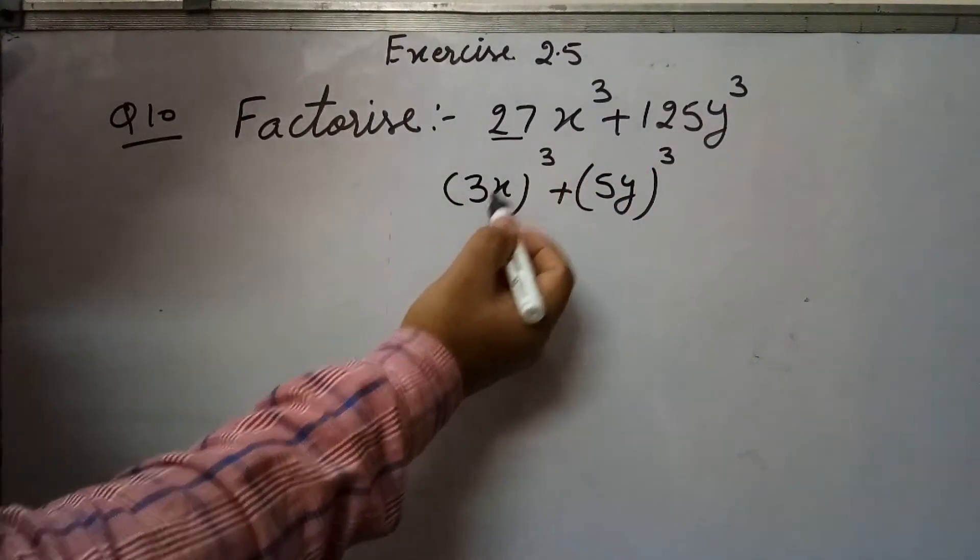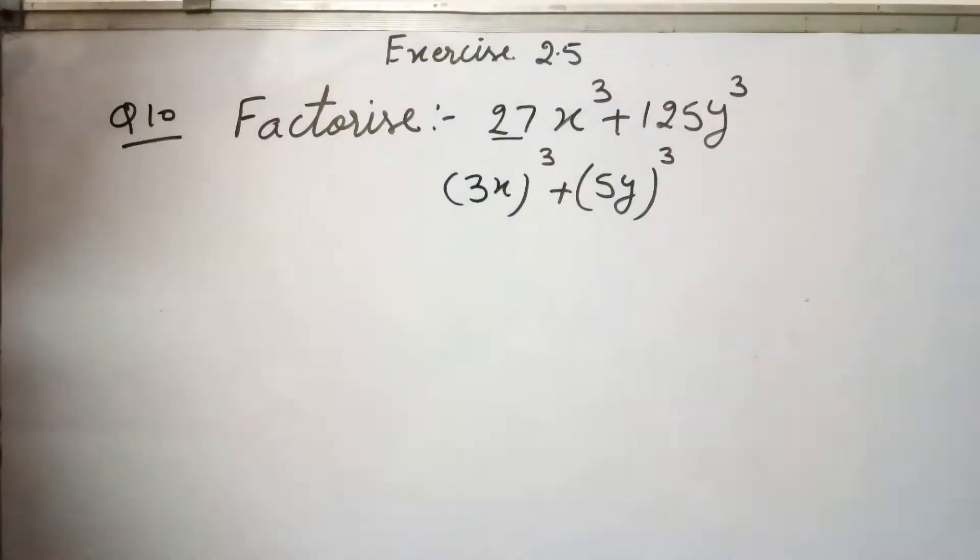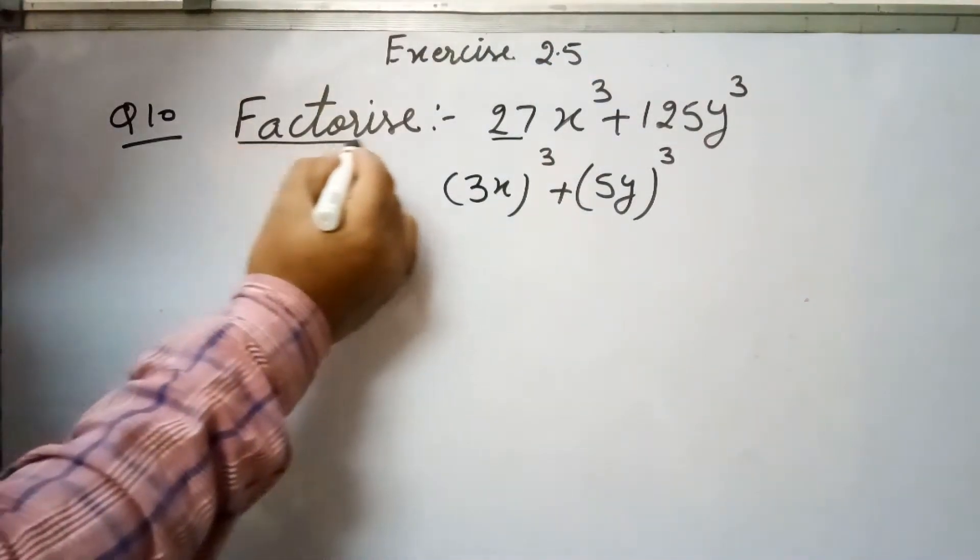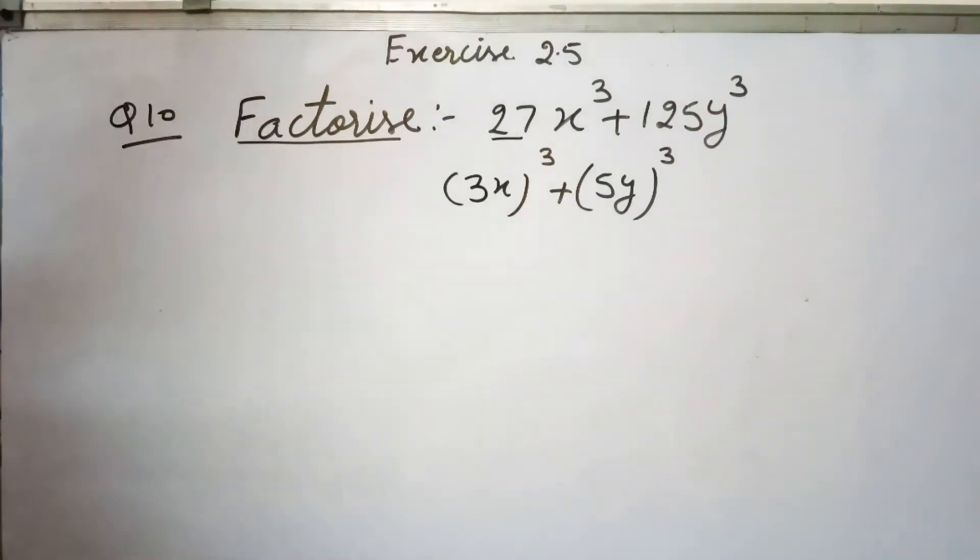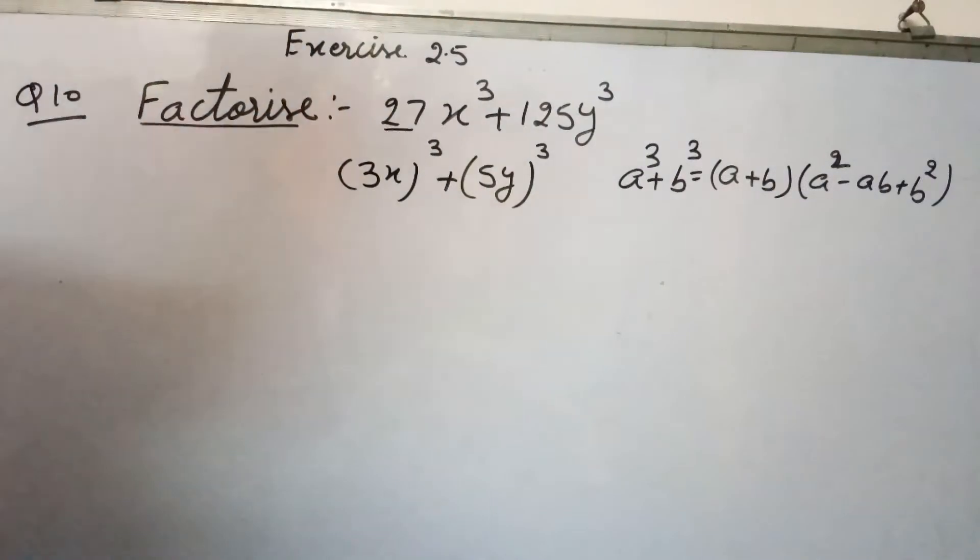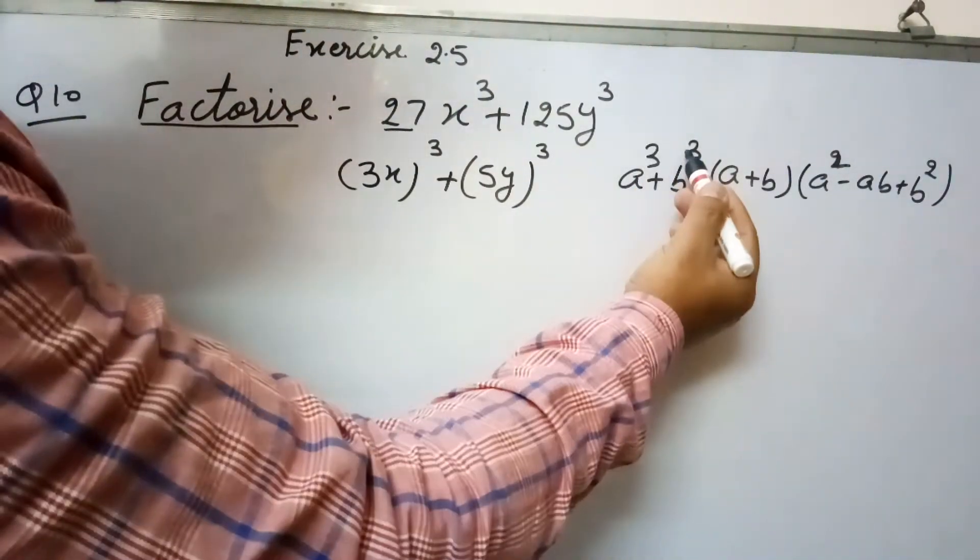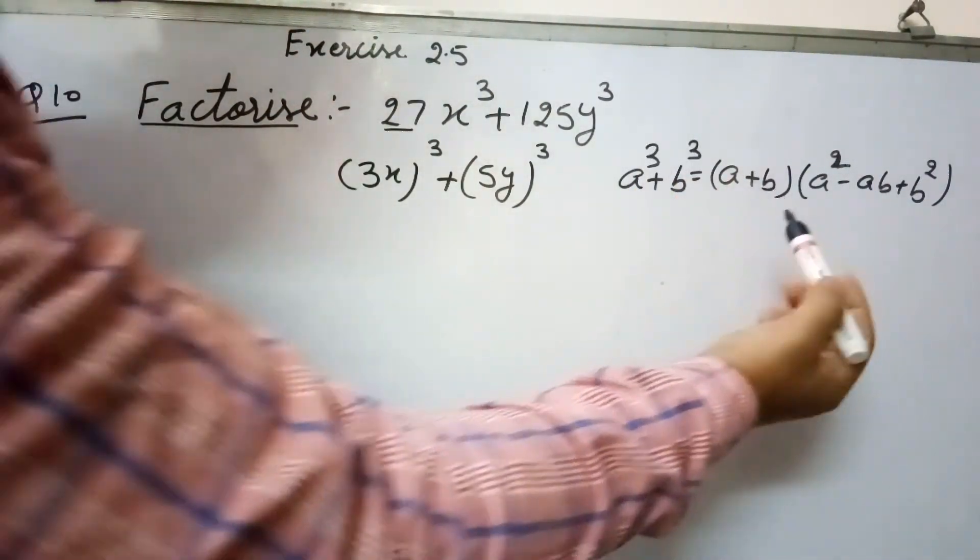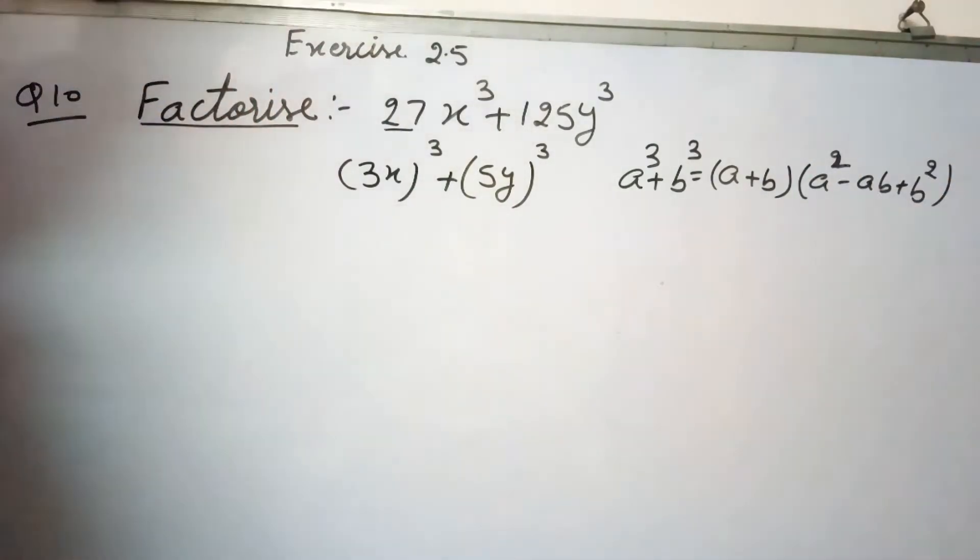So this is a³ + b³. Now we have to factorize, means we have to see the identity which is in the factor form. So for this we have identity a³ + b³ = (a+b)(a² - ab + b²).